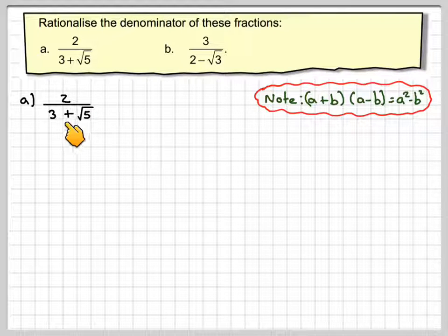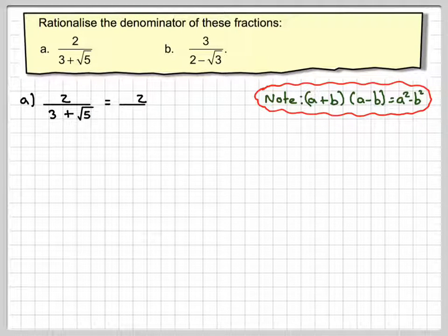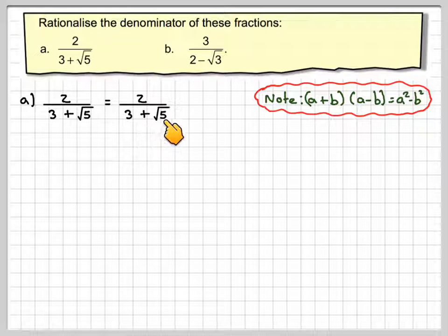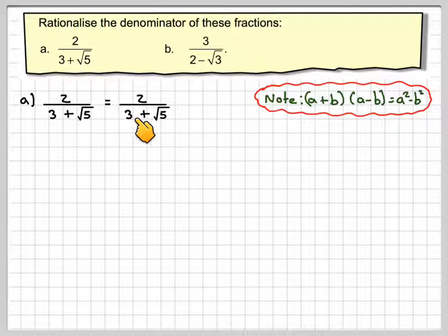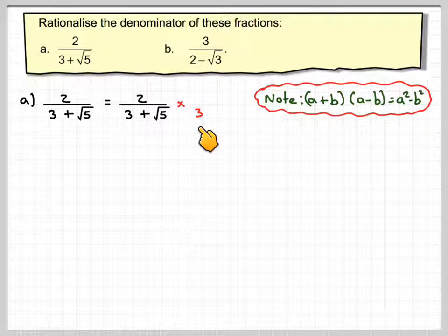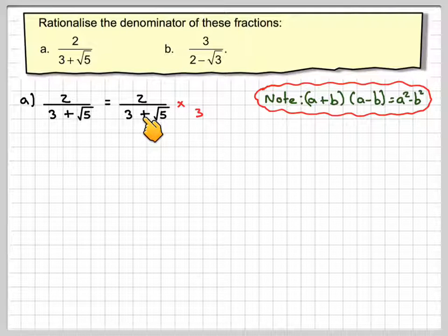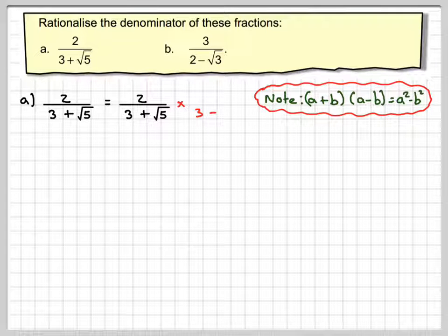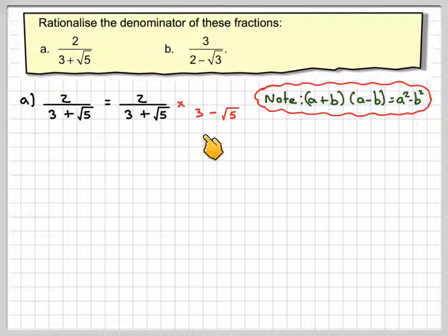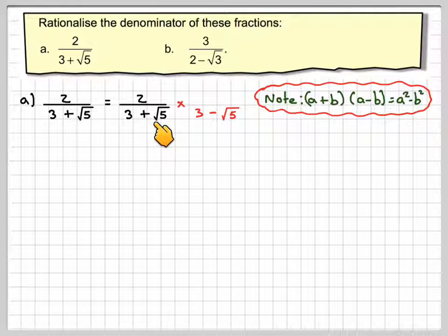So if we've got 2 over 3 plus root 5, then what we do is we look at the denominator, and we're going to multiply it by 3. Now if the sign here is a plus, we'll make the sign here a minus, and then we'll also make that root 5. Okay, so 3 minus root 5, so we've now got this sort of situation.